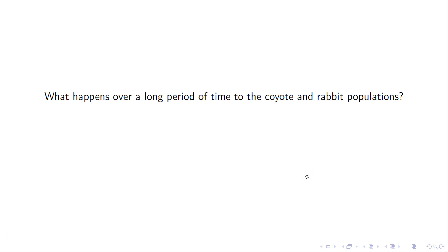And then the question that we're wondering is what happens over a long period of time to the coyote and rabbit populations. In other words, what happens to these states if x0 is the initial state of the population? What are the subsequent states year after year, x1, x2, and x3?